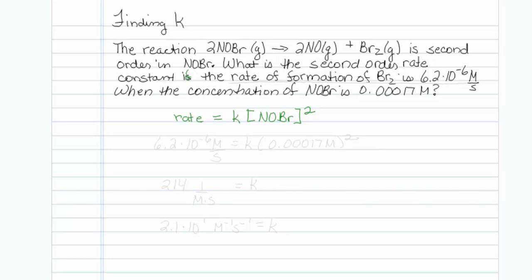So being told the rate of formation of Br2 is 6.2 times 10 to the minus 6 molar per second is the same thing as being told the rate of the reaction is 6.2 times 10 to the minus 6 molar per second, and that's equal to K. And at that particular time, we're told that the concentration of NOBr is 0.00017 molar squared.